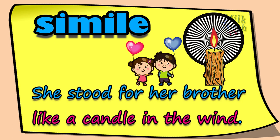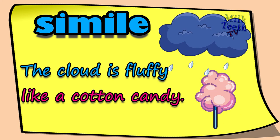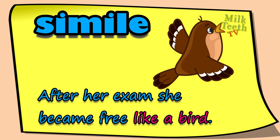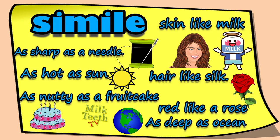'Her eyes sparkled like diamonds when she saw her gift' — simile: sparkled like diamonds. 'She stood for her brother like a candle in the wind' — simile: like a candle in the wind. 'The cloud is fluffy like cotton candy' — simile: fluffy like cotton candy. 'After her exam she became free like a bird' — simile: free like a bird. 'Sam and Pam fought like cats and dogs' — simile: like cats and dogs.